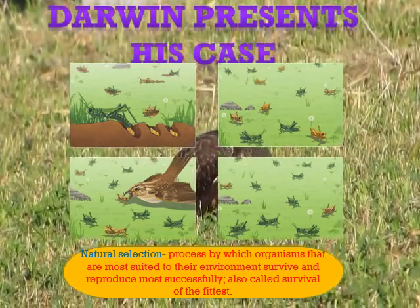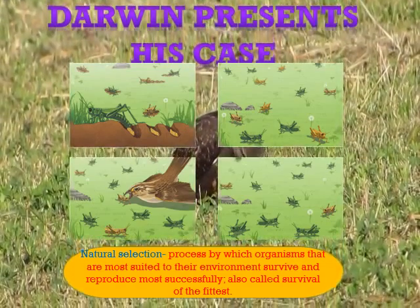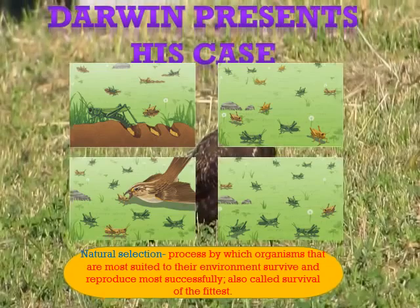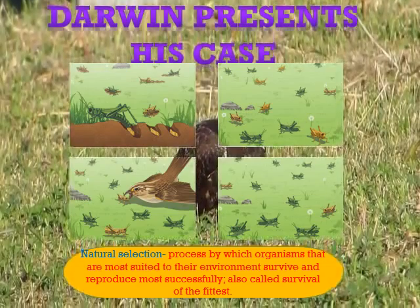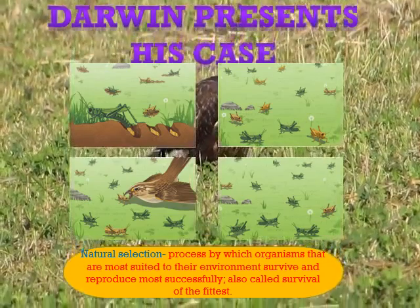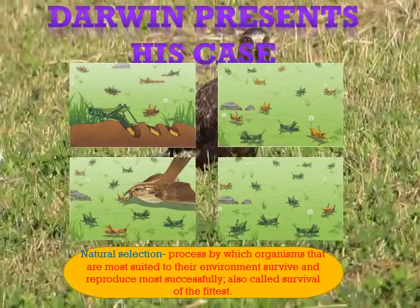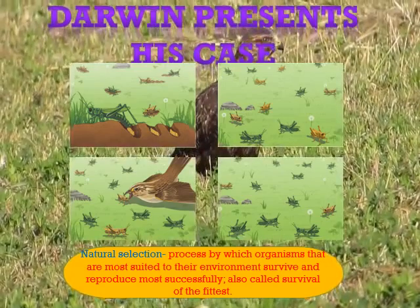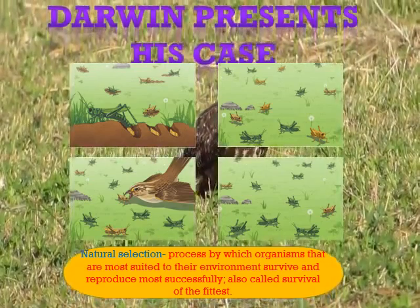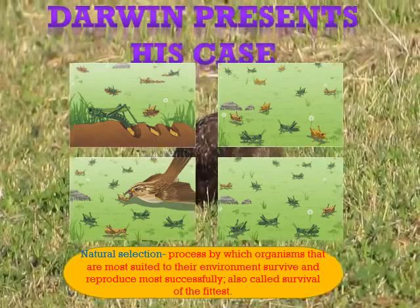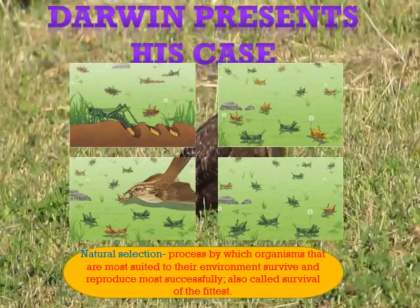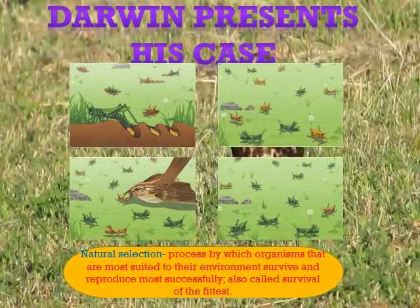Darwin proposed that living species are descended with modification from common ancestors — an idea called descent with modification. According to the principle of common descent, all species, living and extinct, are descended from ancient common ancestors.